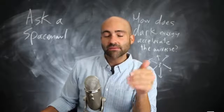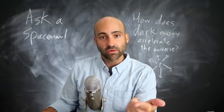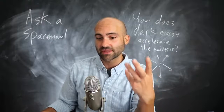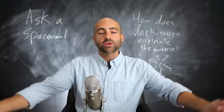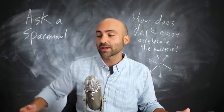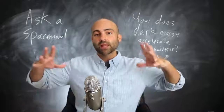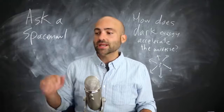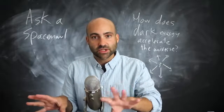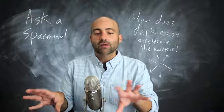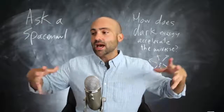But then Einstein found something funny in his equations when applied to the whole universe. One of the craziest things about general relativity is how universally it applies — we can use it to explain the orbit of Mercury, the gravitational radiation from orbiting black holes, and the evolution of the whole entire universe. When Einstein did this, he applied the general relativity field equations to the whole universe.